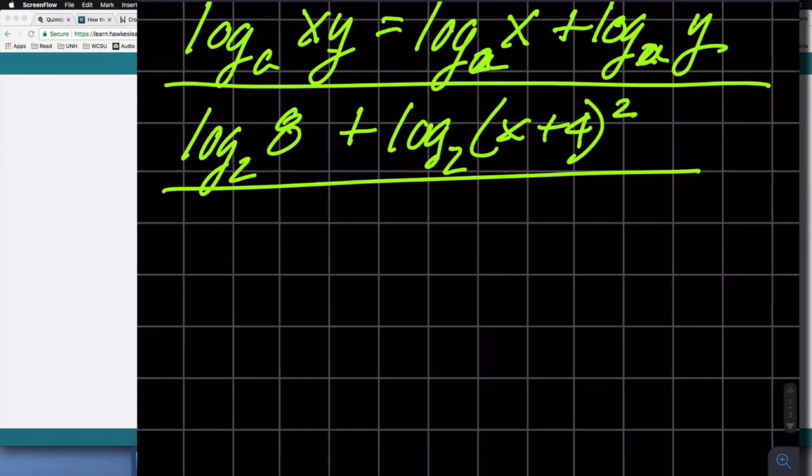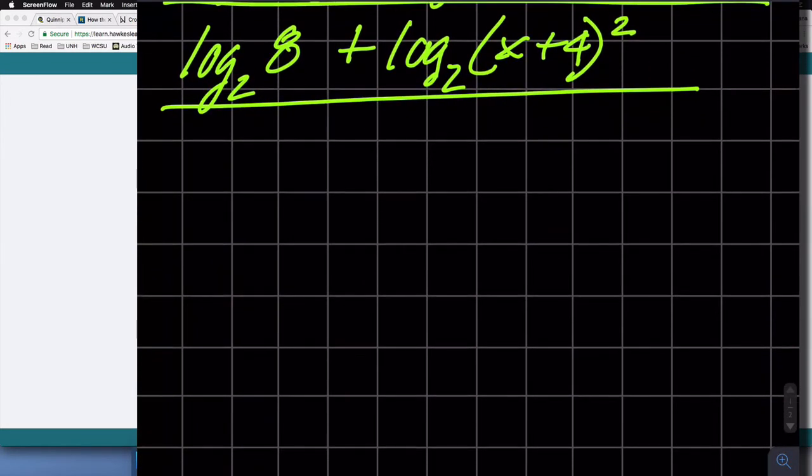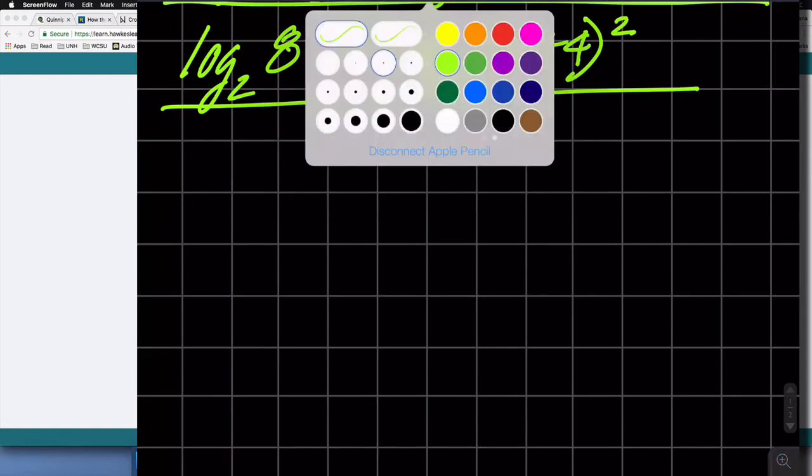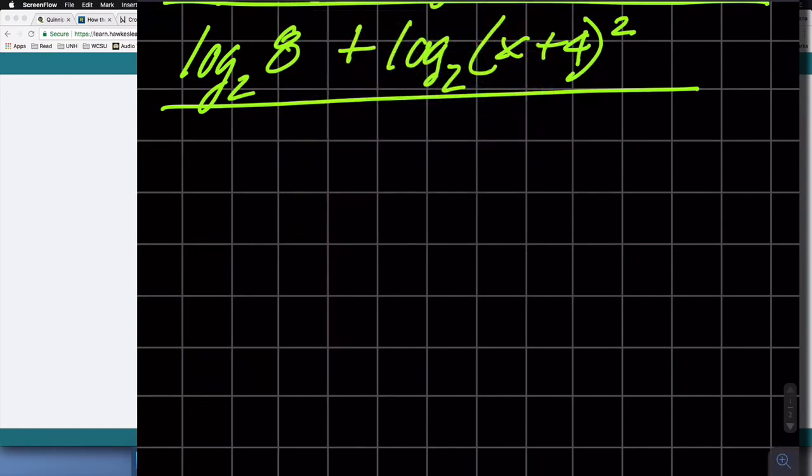So now I've rewritten that original expression as an expression with two terms. So now I'm thinking of a completely different property that allows me to rewrite the second term. So let's focus on the second term.